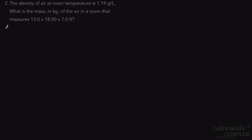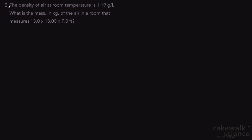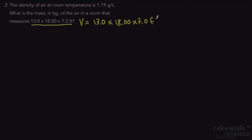Number two: the density of air at room temperature is 1.19 grams per liter. What is the mass in kilograms of the air in a room that measures 13 by 18 by 7 feet? Before we start the factor label method, we need to find the volume of this room, so we multiply all three dimensions. Volume is 13.0 times 18.0 times 7.0 feet, which gives us 1638 cubic feet.